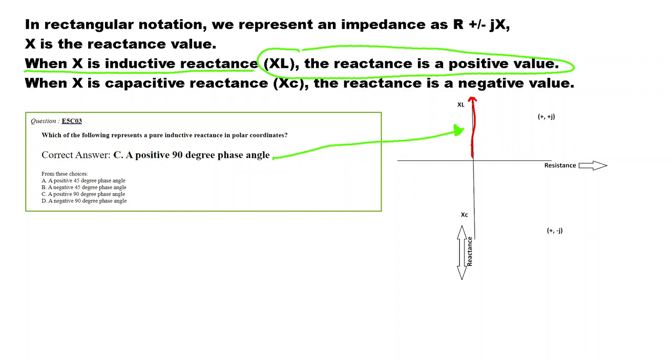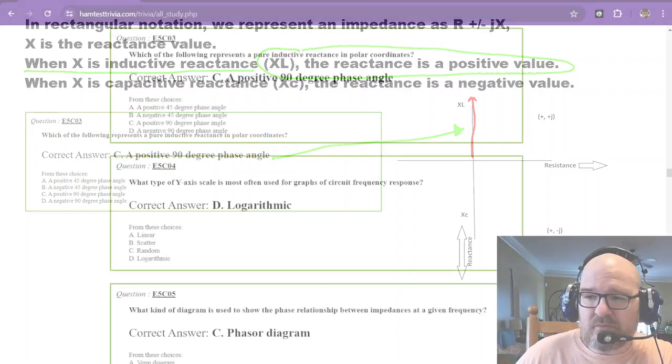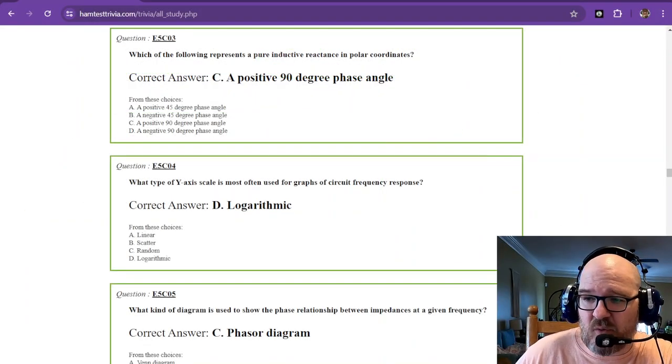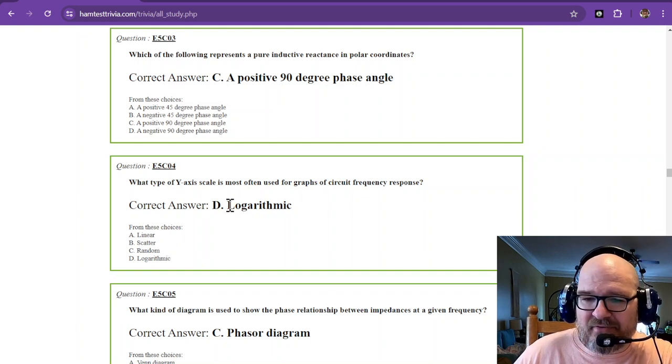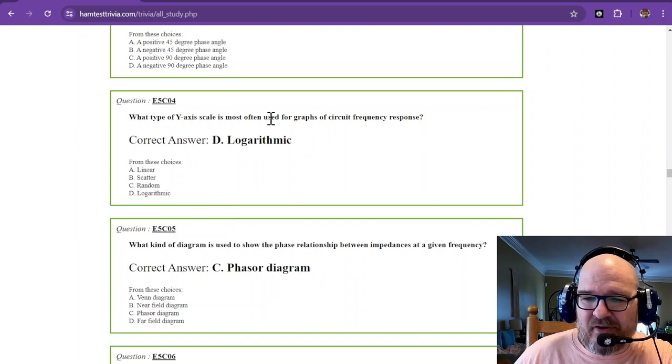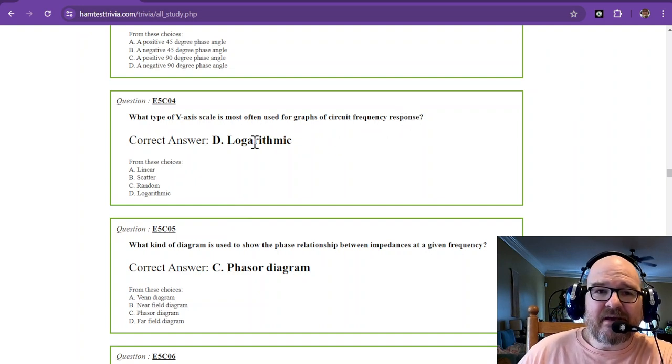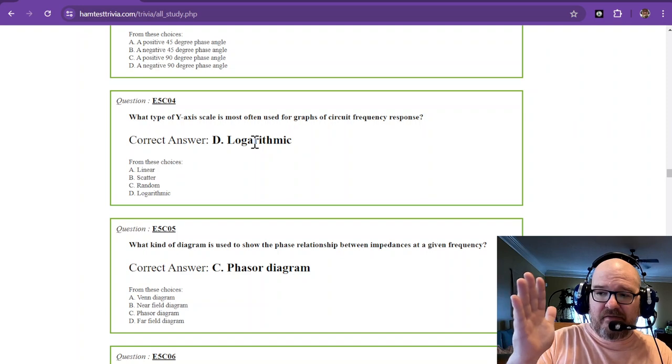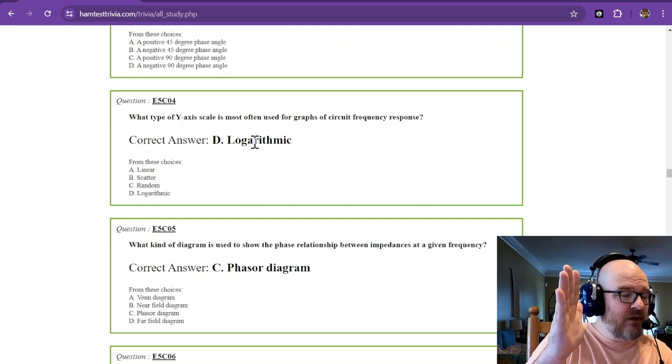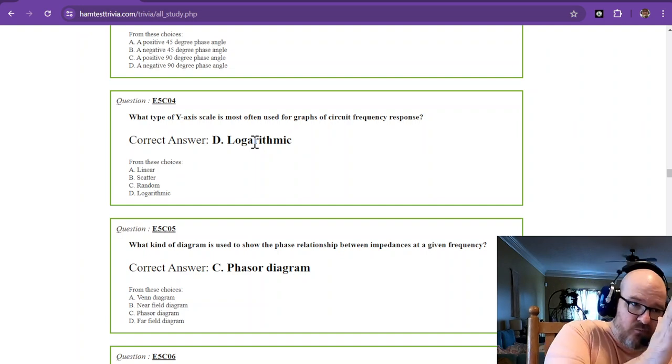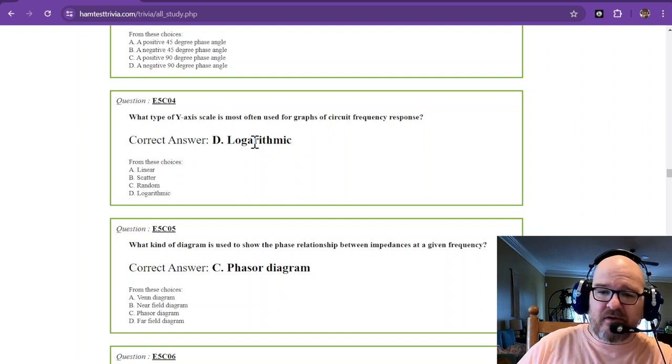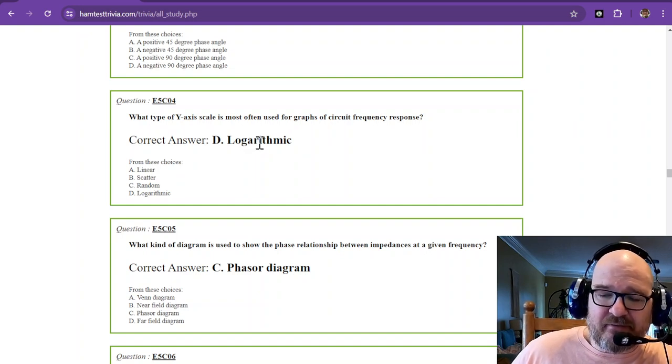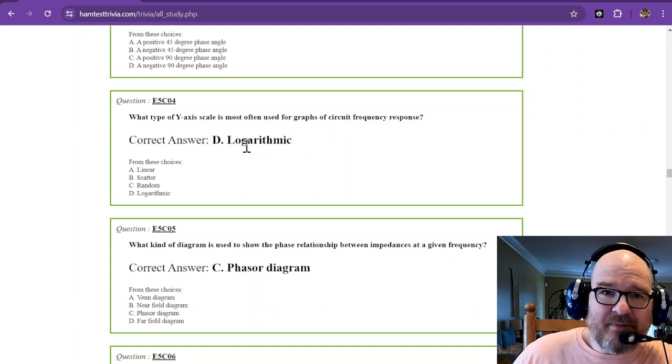You probably will never, ever use this unless you're some kind of super engineer in the ham radio world. So don't worry about it too much. Just let's learn how these work. What type of y-axis scale is most often used for graphs of circuit frequency response. Frequency can take up a lot of space. If you went from zero to 21 megahertz, that's going to take up a whole bunch of space. So we use the logarithmic scale, which will reduce it down and make it easier to read.